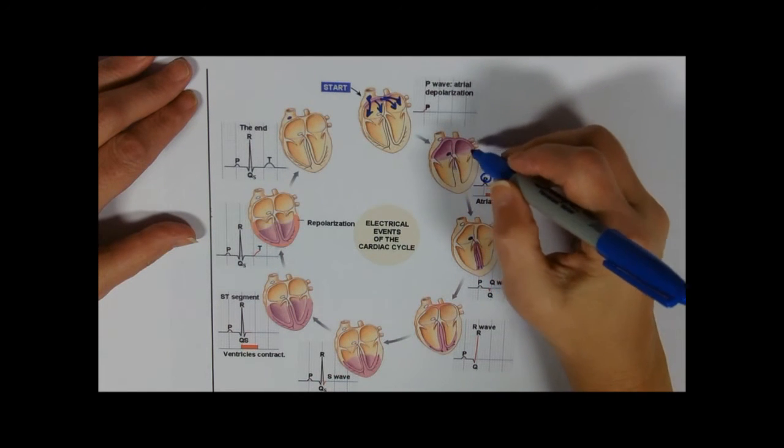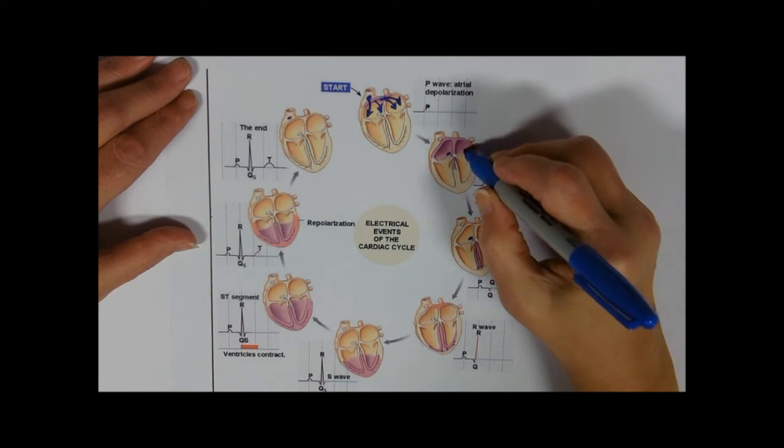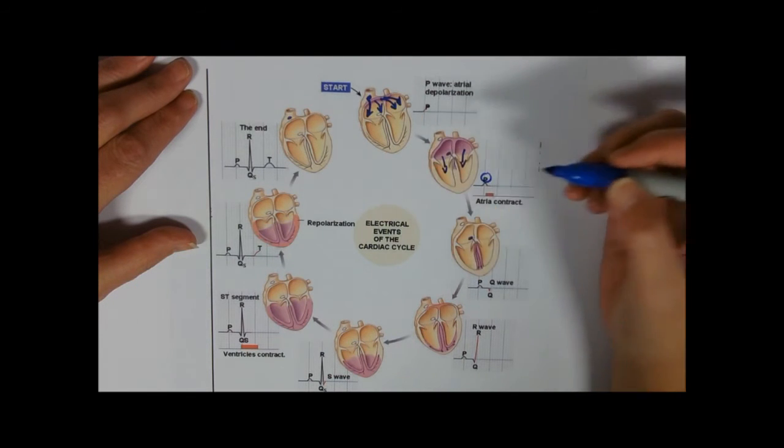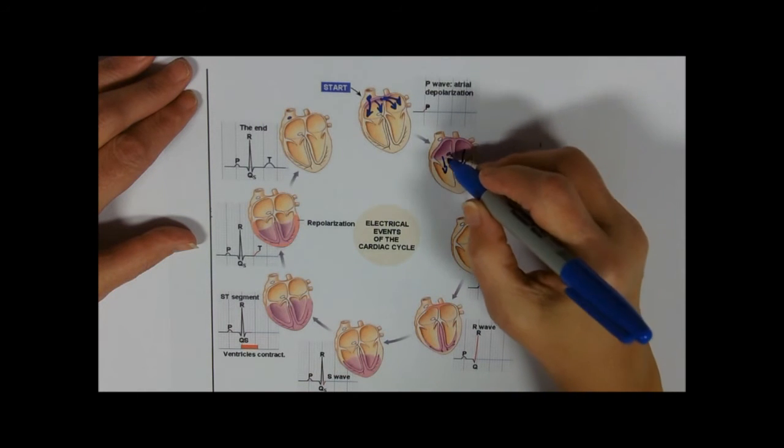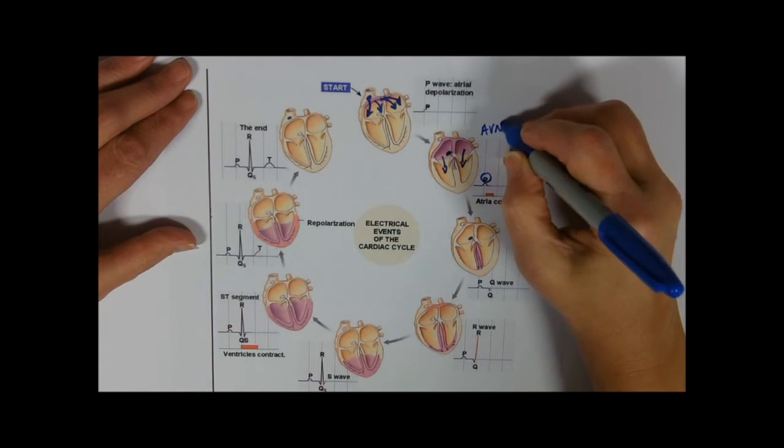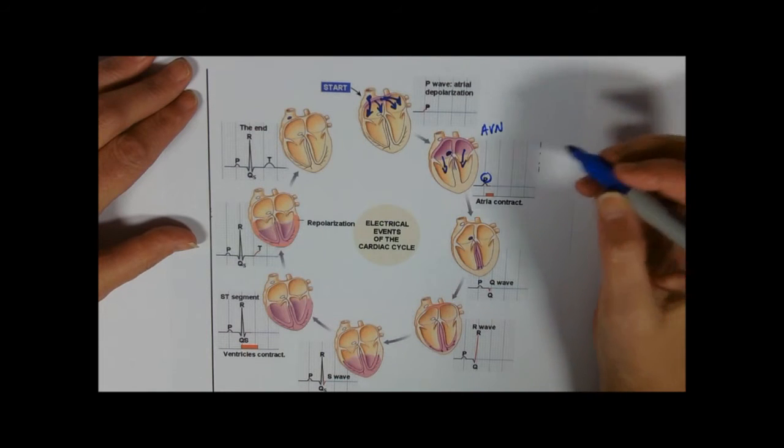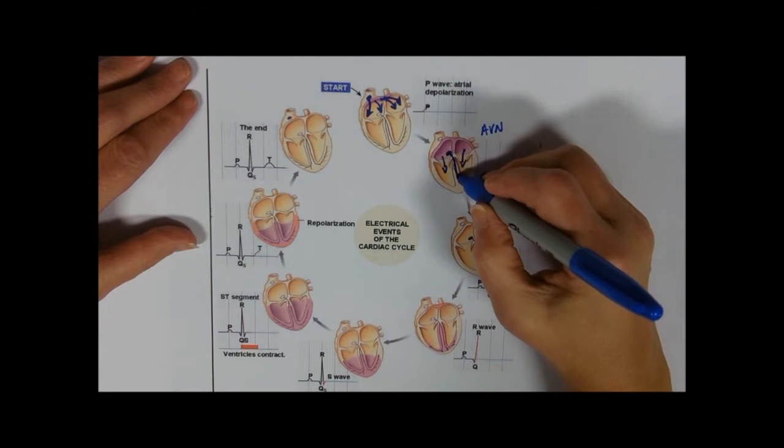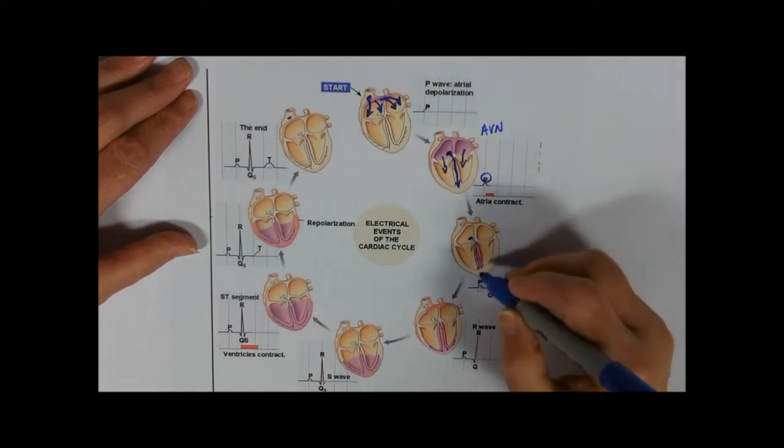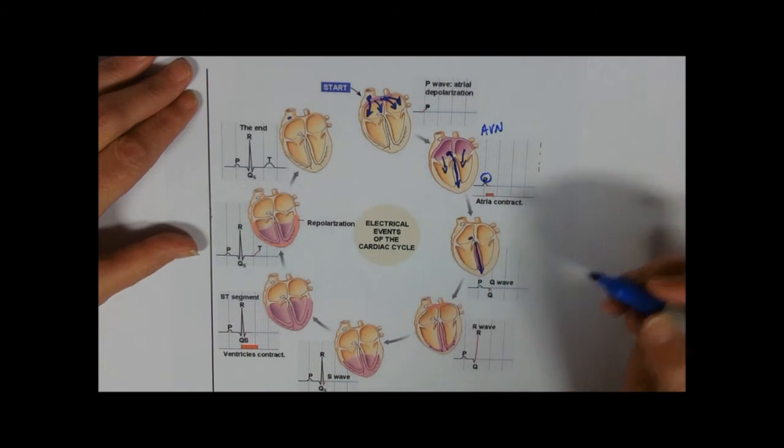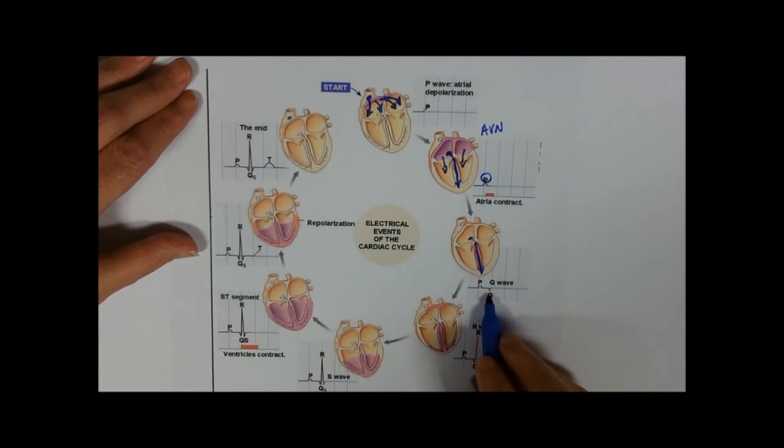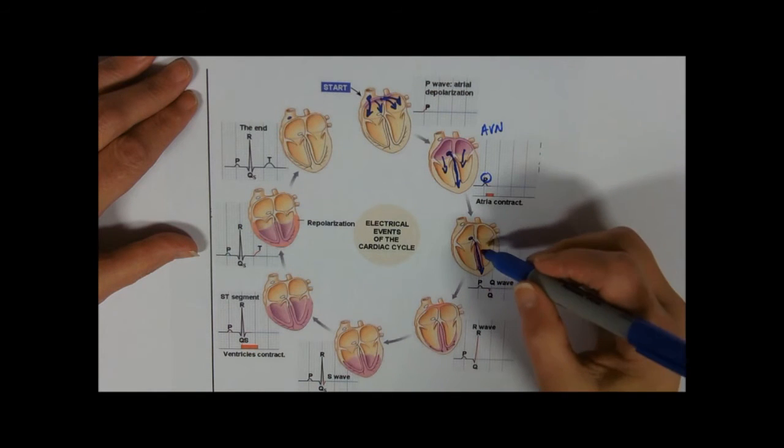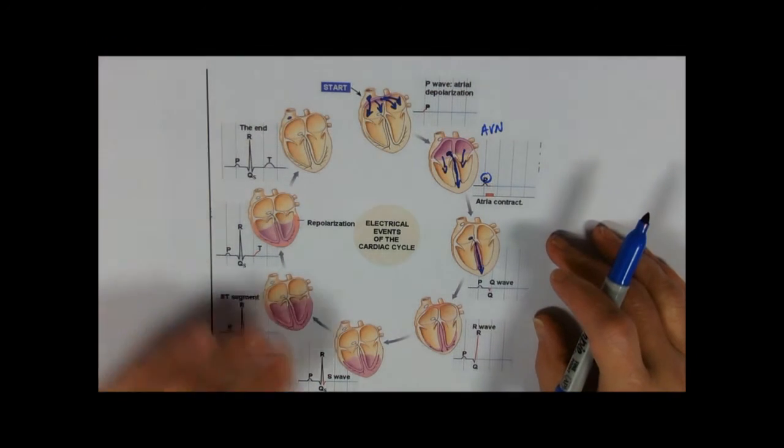So the atria contract and they push the blood forwards down through into the ventricles. And as that happens, that wave of depolarization is gathered up into the AV node, the atrioventricular node. And from the atrioventricular node, it's then going to start heading down the bundle of His down the middle on its journey down to the apex of the heart. Now that actually causes a little inverted Q wave. The little Q wave is actually that traveling down the septum of the heart through the bundle of His.